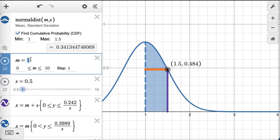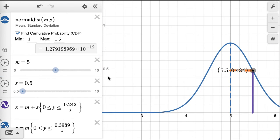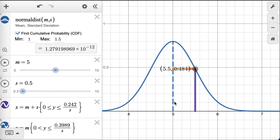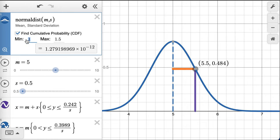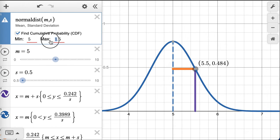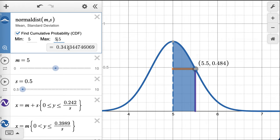I could take the mean out to the mean of 5. I'll have to move my graph over. There it is. And now it goes from 5 to 5.5. So now let's see what that area is, 5 to 5.5, 34%.